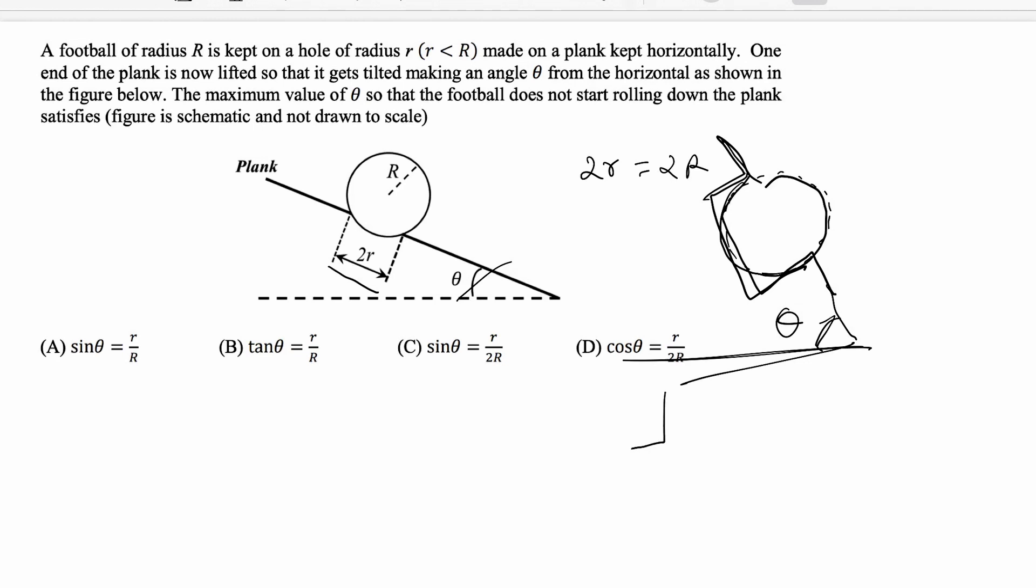the maximum theta we can make is 90 degrees, because the ball will be half here and half outside. This is r, that is also r. So if I'm considering this condition r equals r, theta should be 90 degrees. I'll check which option